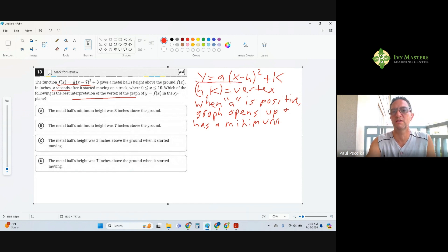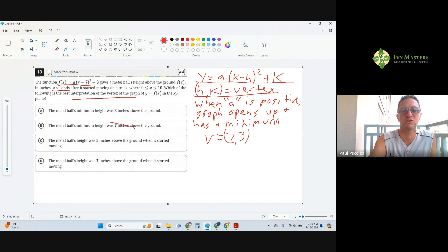What we get here is your vertex when you're in the form y = a(x - h)² + k, your vertex is (h, k). So based on that, your vertex here is going to be (7, 3). Now I need to know the interpretation. It says x is number of seconds, so 7 is second 7, not inches, so those two are gone.